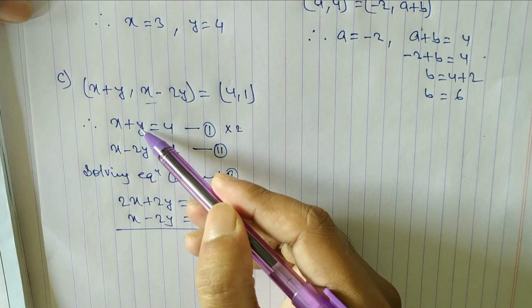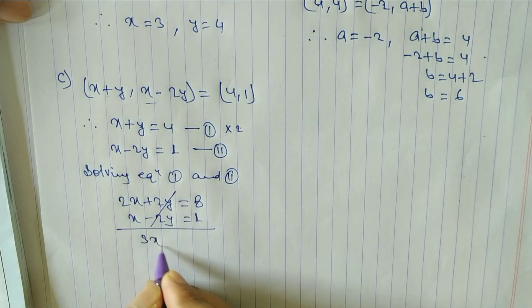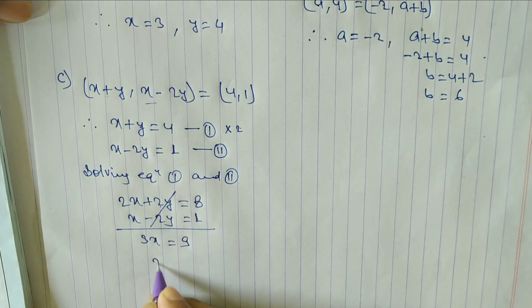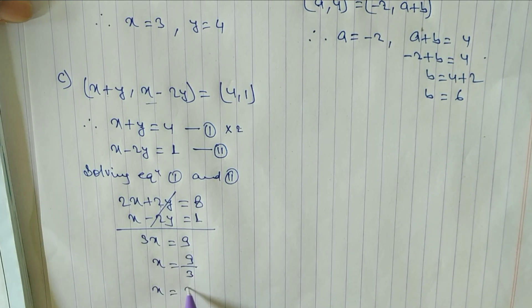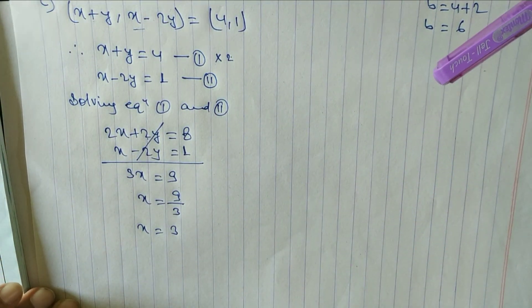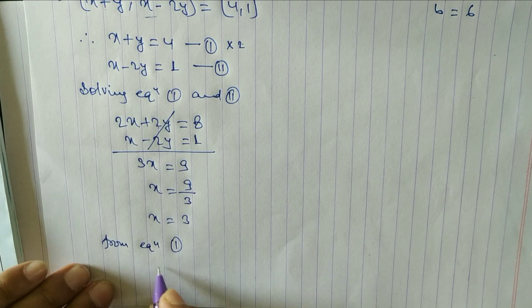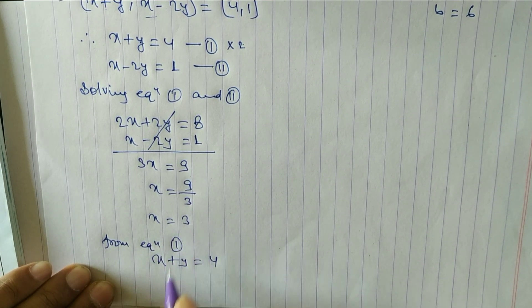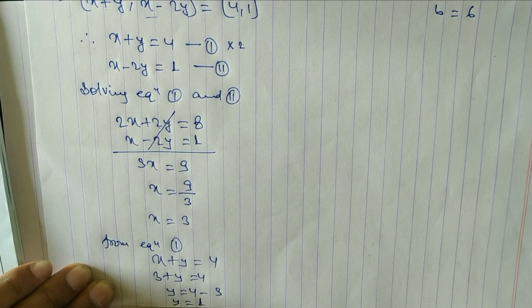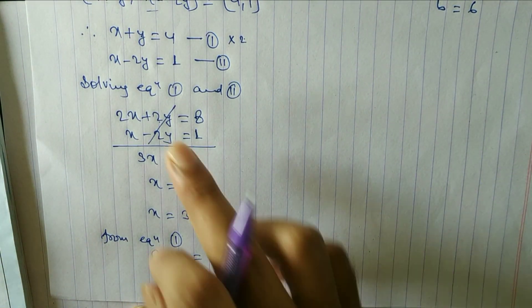One positive 2y and one negative 2y cancel each other. Adding: 2x + x = 3x, and 8 + 1 = 9, so x = 9/3 = 3. Now substituting x = 3 in equation 1: 3 + y = 4, therefore y = 1. So x = 3 and y = 1 for question 1c.